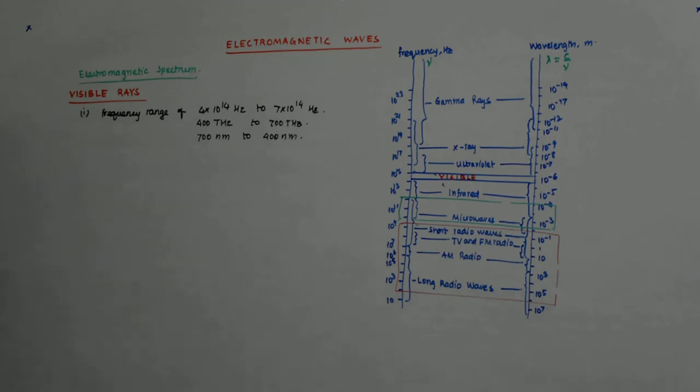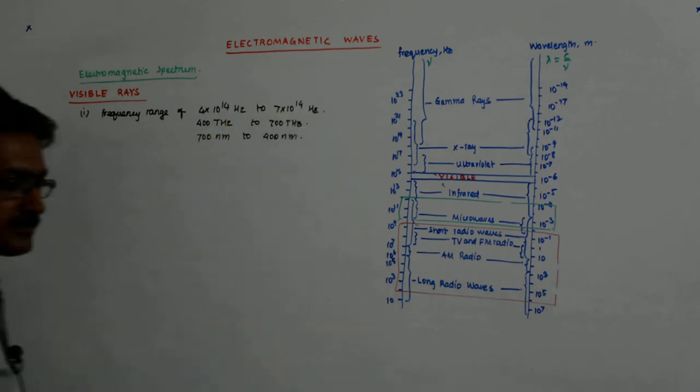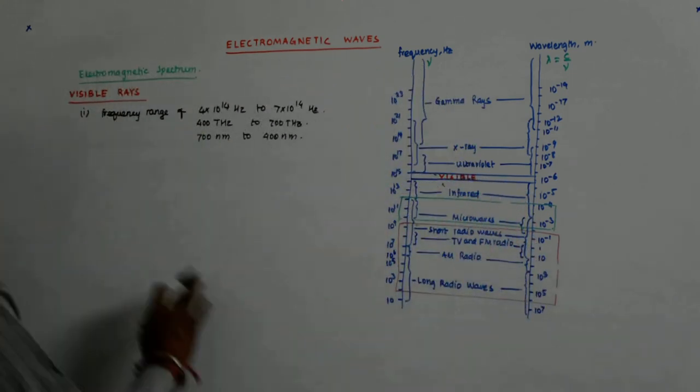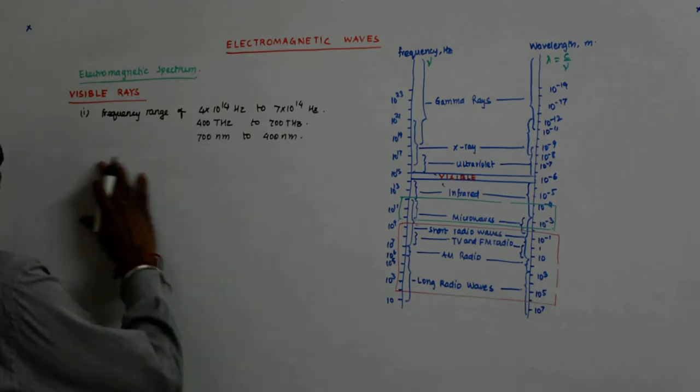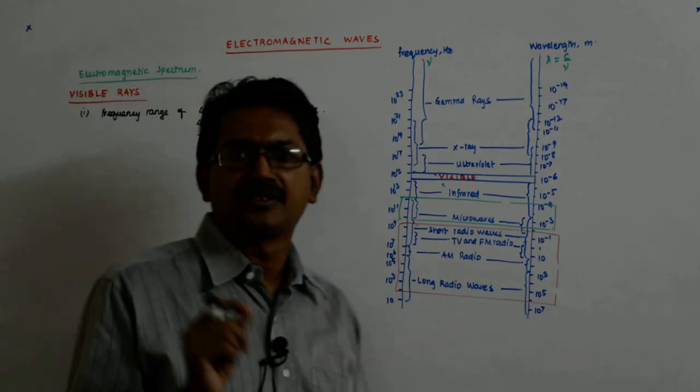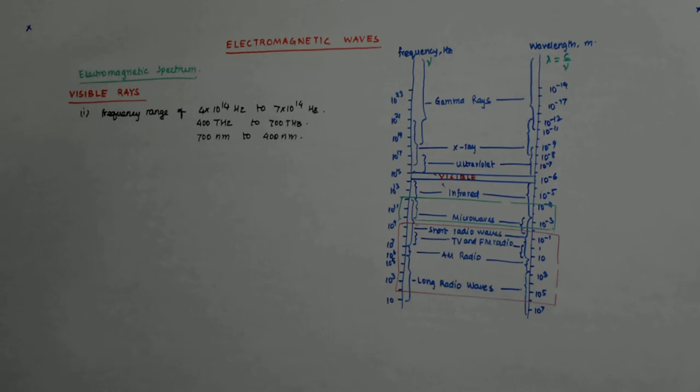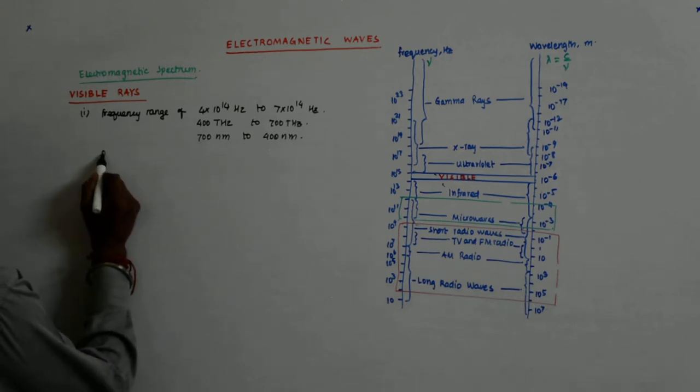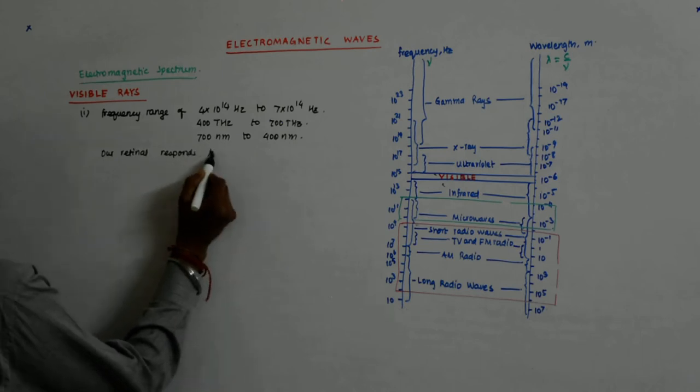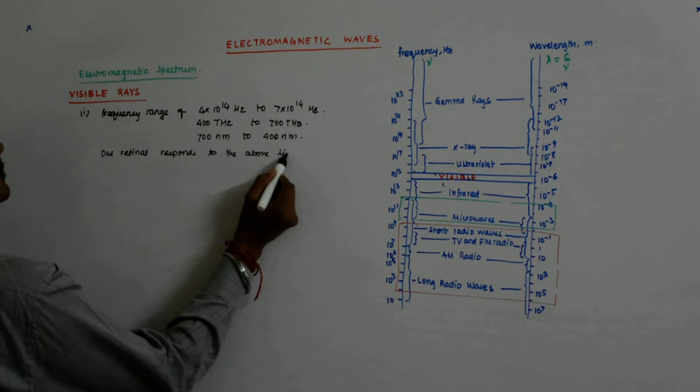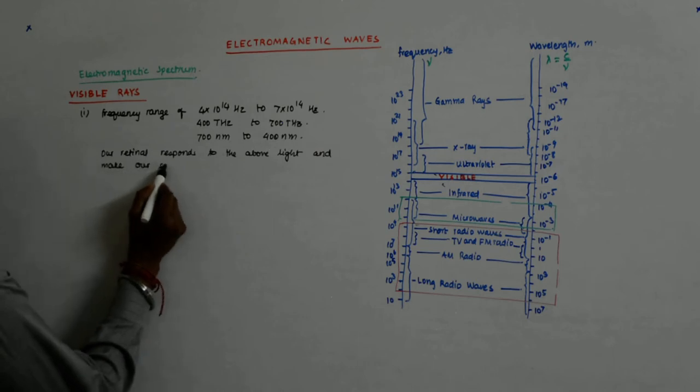So this is what is visible to us. As the frequency goes up, the wavelength goes down. Our eyes can only see these wavelengths in a band of 300 nanometer, starting 400, ending 700. That is all. Our retina responds to the above light and makes our surroundings visible to us.